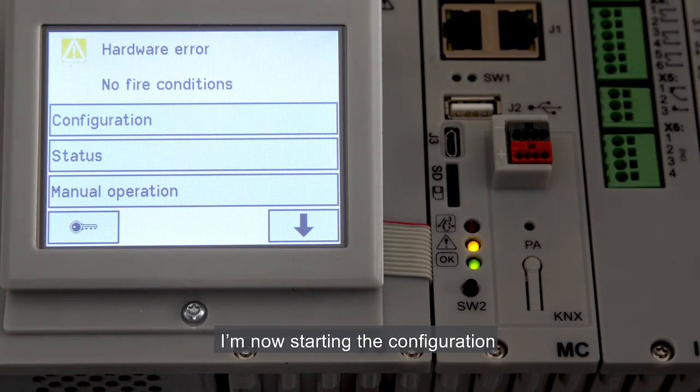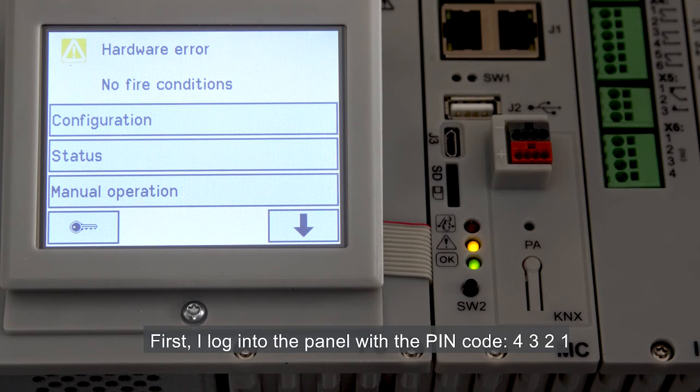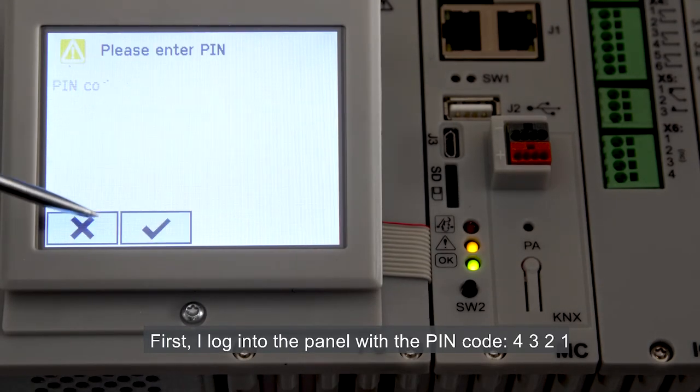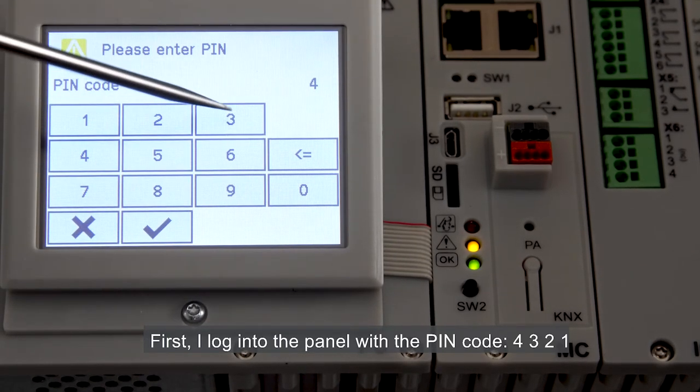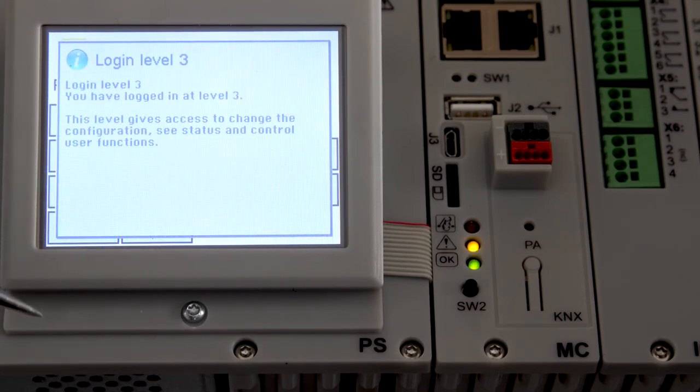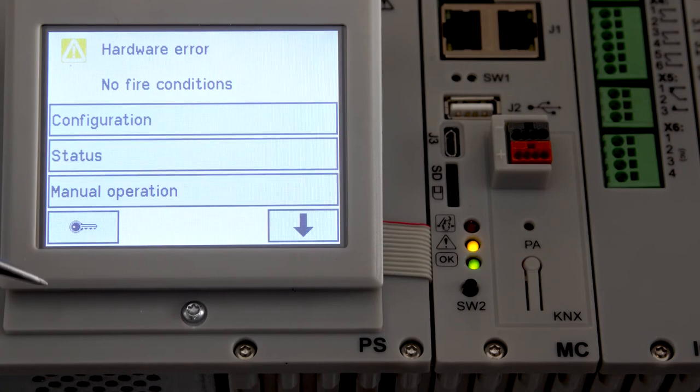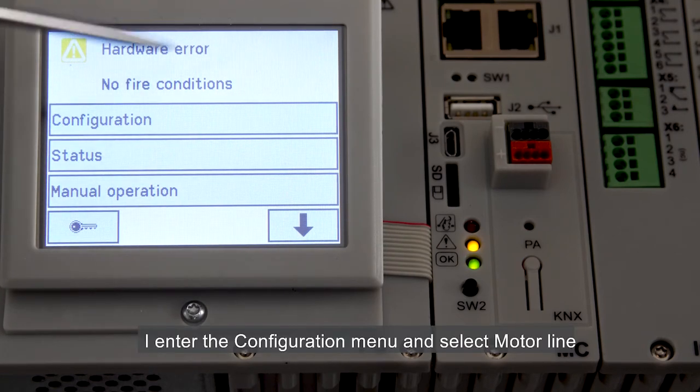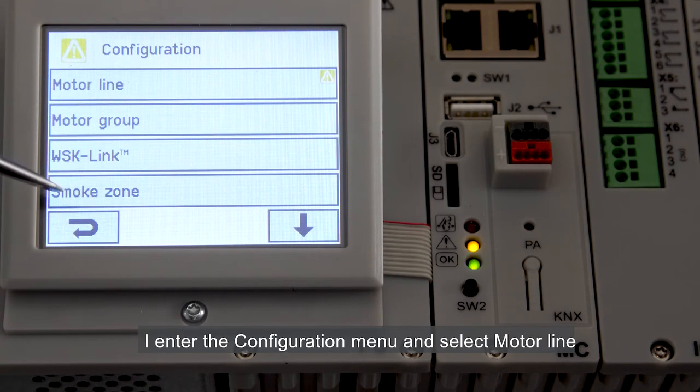I'm now starting the configuration. First I log into the panel with the pin code 4321. I enter the configuration menu and select a motor line.